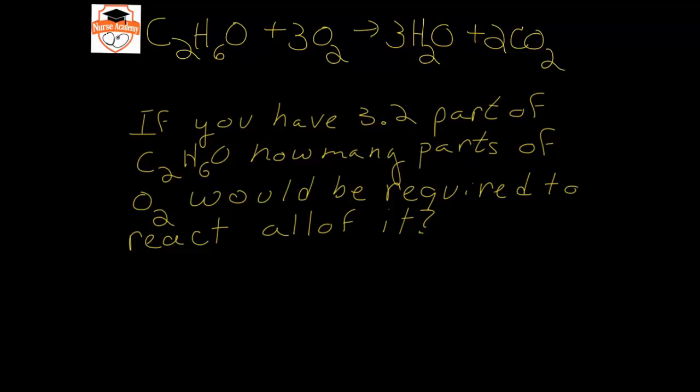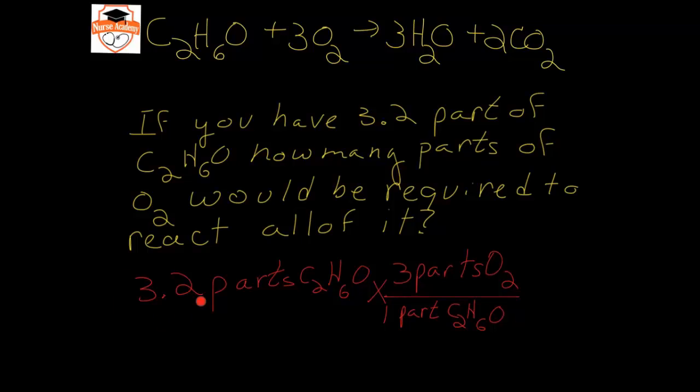This is exactly the same type of math. So the first thing I would do would be to write my information: I have 3.2 parts of ethanol times - I'm trying to get oxygen - so 3 parts O2 over 1 part C2H6O. 3.2 times 3 is 9.6 parts of O2 required. So here would be our answer.